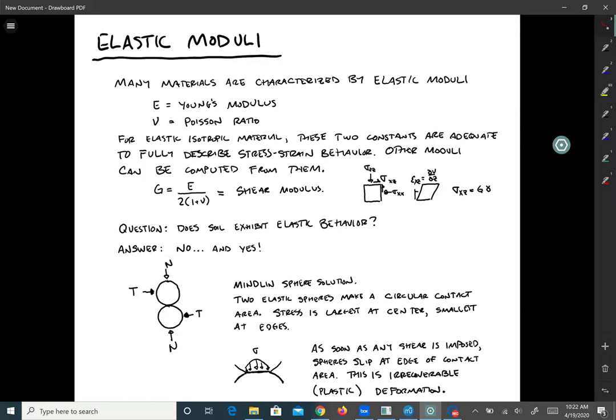The Young's modulus characterizes the stress-strain behavior for vertical loading, like if we do a triaxial test. If we do a simple shear test where we're loading the soil differently, that would be the shear modulus G. We can calculate G if we know E and nu: G equals E over 2 times 1 plus nu, and that's the shear modulus.